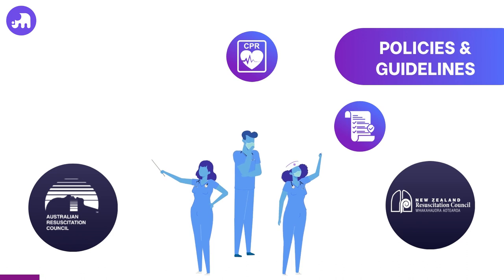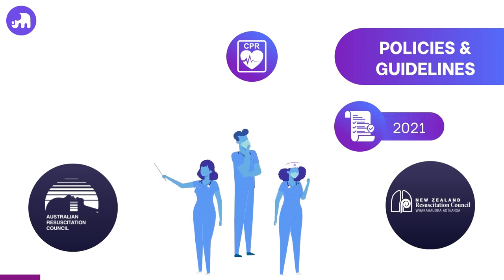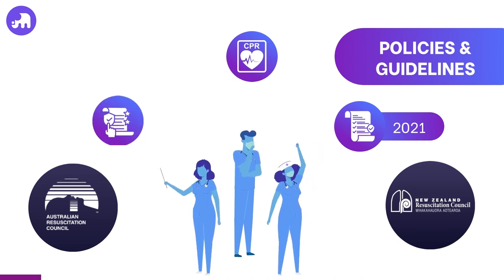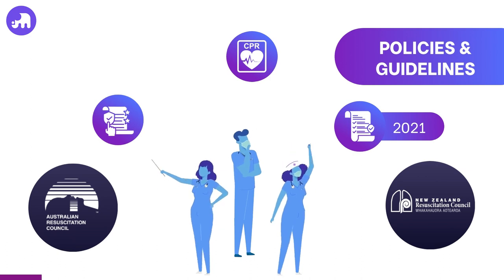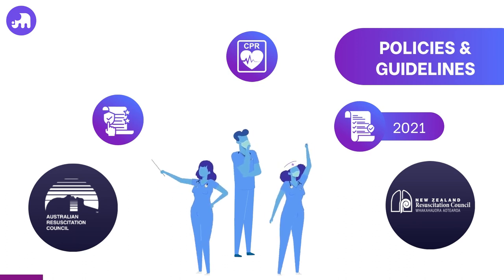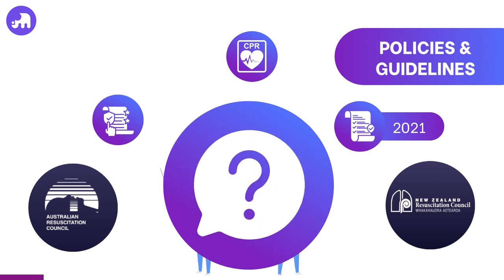It is from these guidelines, recently updated in 2021, that organisations align and update their own ALS policy and procedures, aiming to deliver the best, most up-to-date practice during a cardiac arrest. This regular review keeps standards high, therefore ensuring the best outcome for the victim. Now pause and ask yourself: Am I familiar with my organisation's ALS policy? If not, make sure to access and thoroughly read the policy, ensuring it is up-to-date and mirrors your role's expectations.